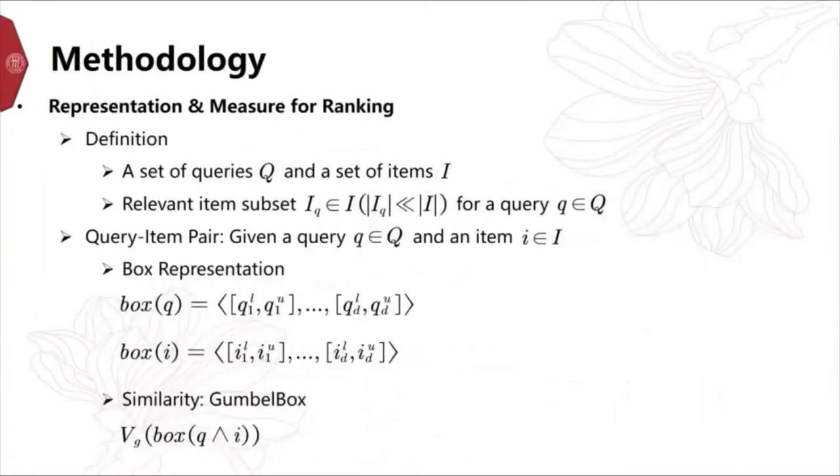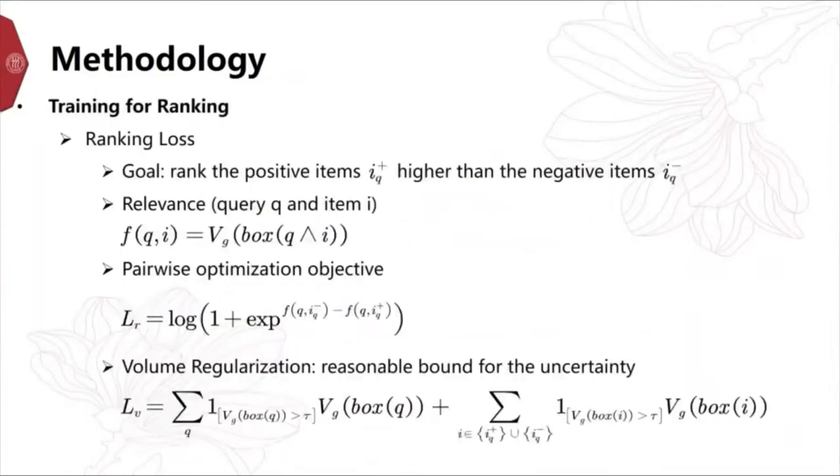Now we begin to introduce our methodology in ranking task. In definition, given a set of queries Q and a set of items I and a relevant item subset for each query. We can give the box representation of queries and items and measure the relevance by GumbelBox. For training, the ranking loss is designed to rank the positive items higher than the negative items. We optimize the ranking task by pairwise objective and add a volume regularization. We penalize the volumes of boxes when they become greater than a fixed value, and it can give a reasonable bound for the measure of uncertainty.